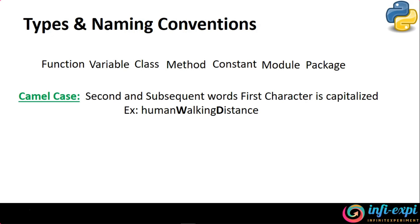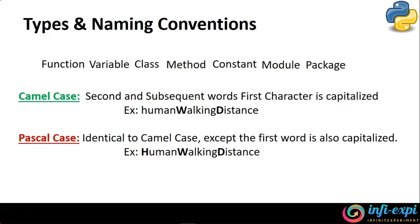The first naming standard is camel case. In camel case, you might have multiple words represented in a name. The first word will have all letters in lowercase. The subsequent words in that name will have their first character in caps. Then we have Pascal case, which is more similar to camel case. You might have multiple words representing the type name, and all words' first characters will be in caps.